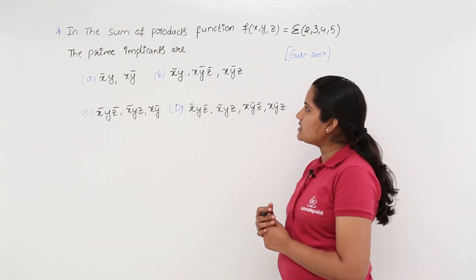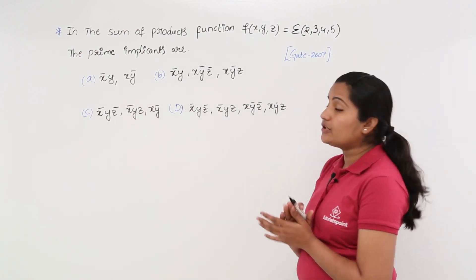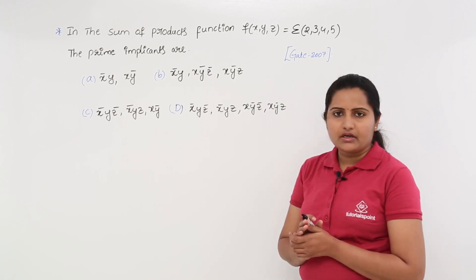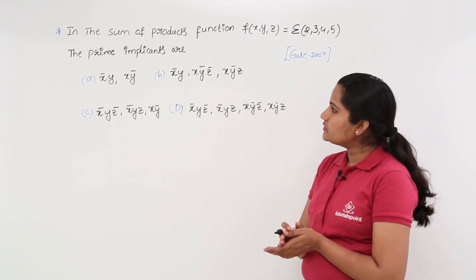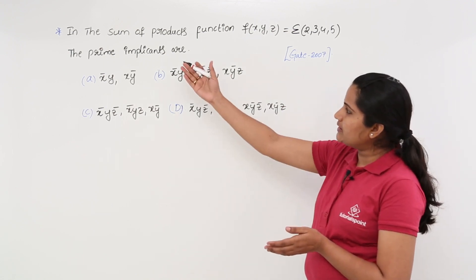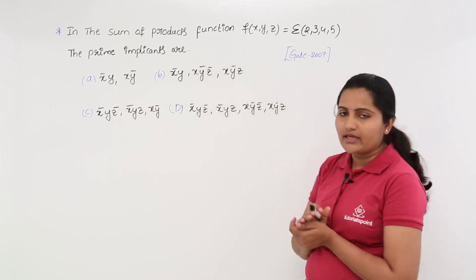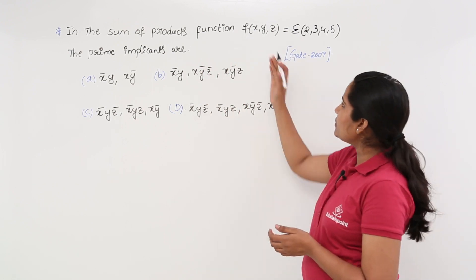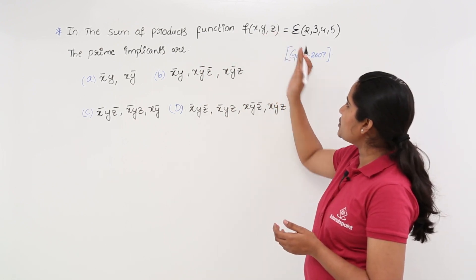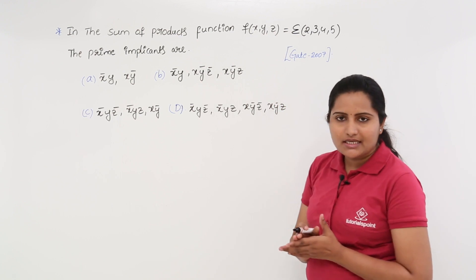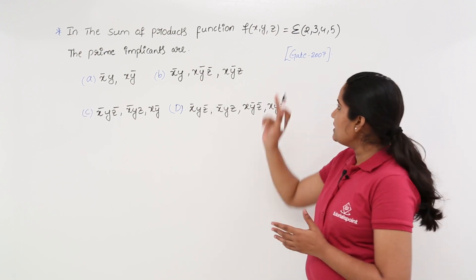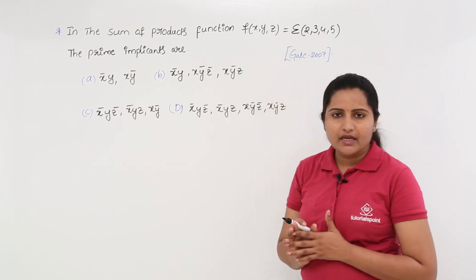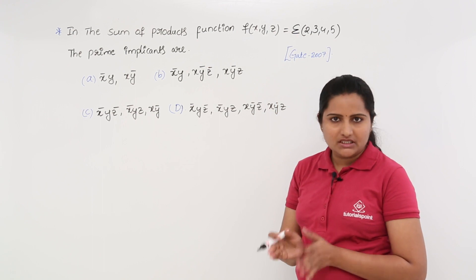See the problem here — this is given in GATE 2007, so this may be a model for gate. Here in the sum of products function, SOP function, f(x, y, z) is equal to summation of minterms 2, 3, 4, 5.